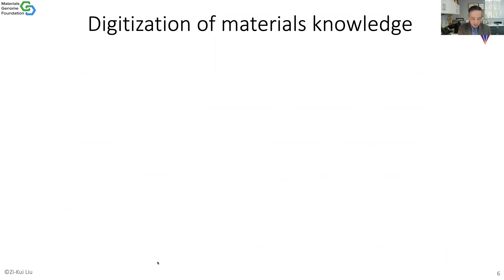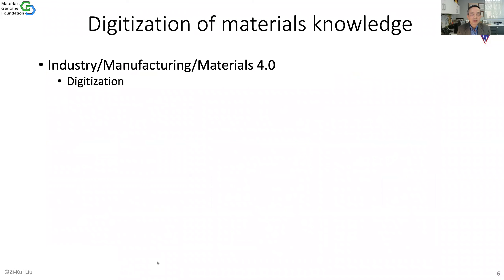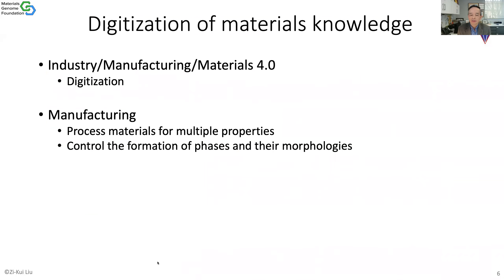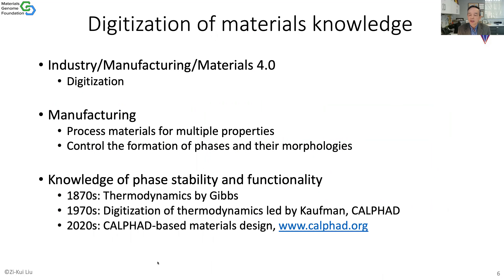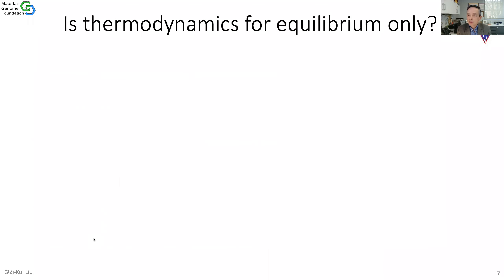The idea is that in this industrial revolution 4.0, which is about digitization, if you look at manufacturing of materials — the process of materials — there are multiple properties that control the formation of phases. That's the key: the morphologies. Phase stability is basically thermodynamics. 150 years ago, the combined law was formulated by Gibbs. 100 years later, the digitization of thermodynamics was formulated by Larry Kaufman and from the CALPHAD Foundation. As many of you know, today CALPHAD databases are widely used in the world by most companies dealing with materials.